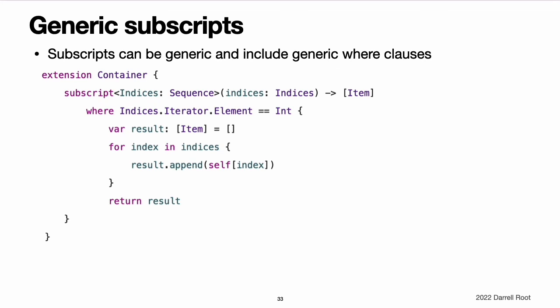Generic subscripts. Subscripts can be generic, and they can include generic where clauses. You write the placeholder type name inside angle brackets after subscript, and you write a generic where clause right before the opening curly brace of the subscript's body. This extension to the container protocol adds a subscript that takes a sequence of indices and returns an array containing the items at each given index. This generic subscript is constrained as follows: the generic parameter indices in angle brackets has to be a type that conforms to the sequence protocol from the standard library. The subscript takes a single parameter, indices, which is an instance of that indices type. The generic where clause requires that the iterator for the sequence must traverse over elements of type integer. This ensures that the indices in the sequence are the same type as the indices used for a container. Taken together, these constraints mean that the value passed for the indices parameter is a sequence of integers.